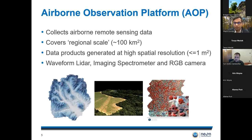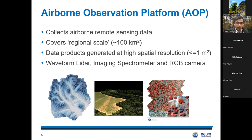The airborne observation platform consists of a small twin-engine airplane fitted with three sensors: the waveform LiDAR, imaging spectrometer, and a high-resolution RGB camera. All of these sensors provide data at a high spatial resolution of less than one meter squared. The AOP typically samples an area of around 100 square kilometers for every NEON site, so you could think of this as a regional-scale data collection for each NEON site.